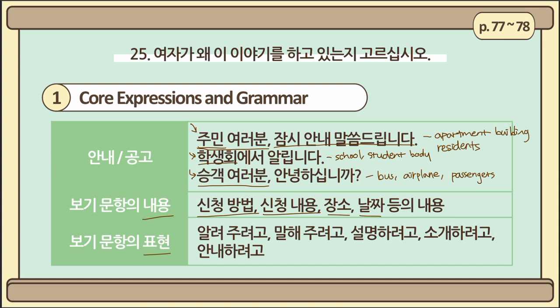The multiple-choice options in this section typically include a few fixed expressions. If you want to know their literal meaning: 알려주다 means 'to inform somebody of something,' 말해주다 means 'to tell somebody something,' 설명하다 means 'to explain,' 소개하다 means 'to introduce,' and 안내하다 means 'to make something known.' Basically, they all have the same meaning — to provide the listener with some information. So when you come across those types of expressions, please just pay attention to the noun part right before the particle 을.